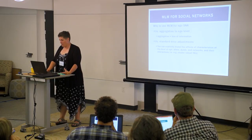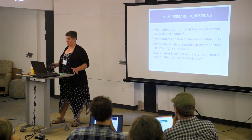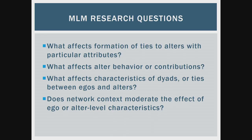Here are some kinds of questions MLM can answer: What affects the formation of ties to alters with particular attributes — for example, what kinds of egos tend to form cross-racial ties? What affects alter behavior — what characteristics of egos or alters predict how much support alters provide? What affects characteristics of dyads — predicting how much conflict there is in a relationship? And the coolest: cross-level interactions — does the network context moderate the effect of some ego or alter level characteristic?